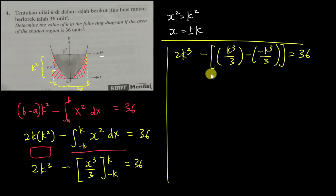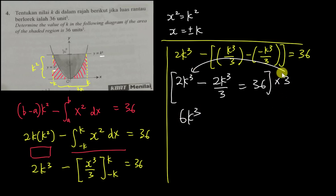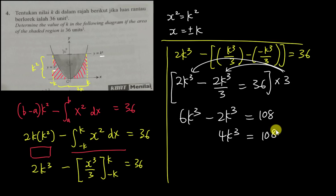Since negative negative becomes positive, I combine the terms: 2k³ − 2k³/3 = 36. Multiplying the whole equation by 3 gives 6k³ − 2k³ = 108, so 4k³ = 108. Dividing by 4 gives k³ = 27, therefore k = 3.